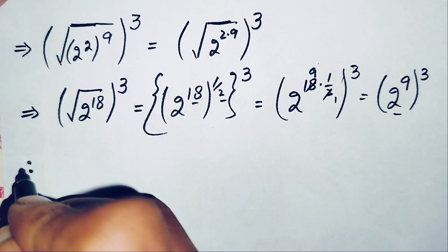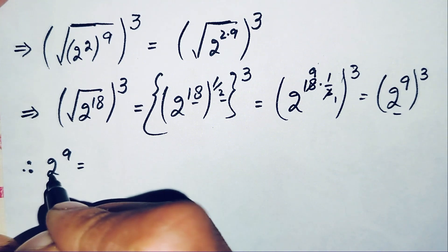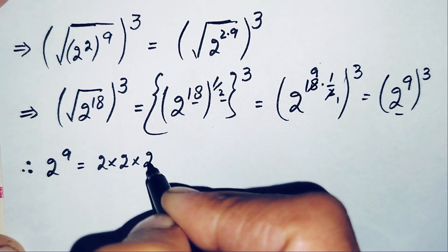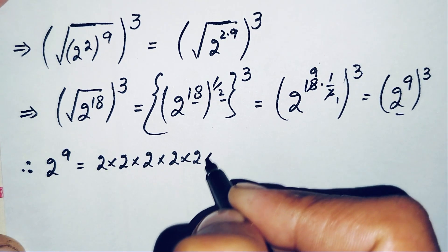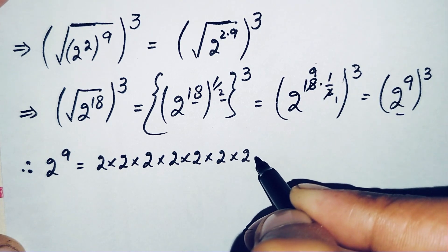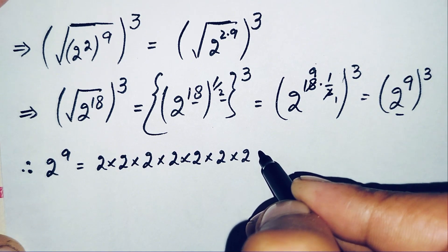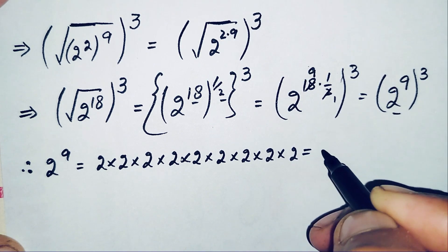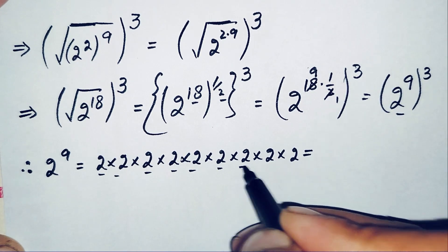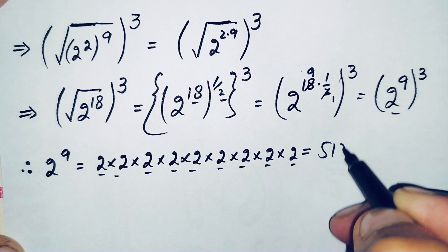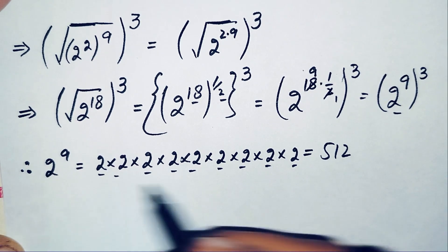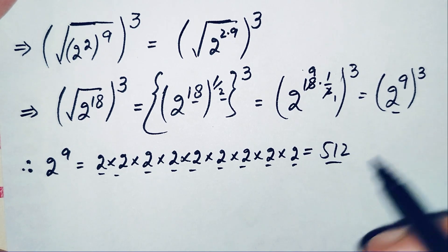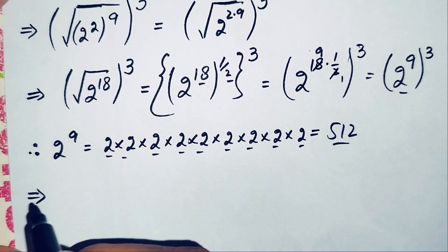The value of 2 raised to power 9 means multiplying 2 nine times: 2×2=4, 4×2=8, 8×2=16, 16×2=32, 32×2=64, 64×2=128, 128×2=256, 256×2=512. So the value of 2 raised to power 9 is 512. We replace 2 to power 9 with 512.